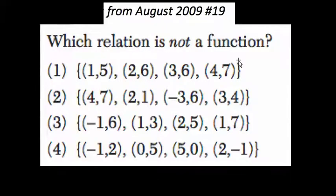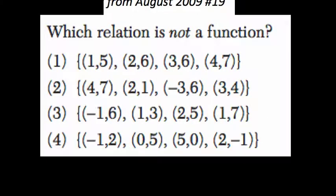Okay, so here we want to know which relation is not a function. In other words, the ordered pairs in each choice—they want to know which has a relationship between the input and output (the x and y) that is not a function.